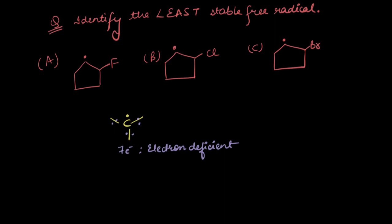But what do we have here? We have fluorine, chlorine, and bromine atoms attached — electronegative species, electron-withdrawing groups that tend to withdraw electron density through sigma bonds and show minus-I effect. But who would have the highest minus-I effect? The one that is most electronegative, because it would have the highest tendency to pull the shared pair of electrons towards itself. So, fluorine will have the maximum minus-I effect.